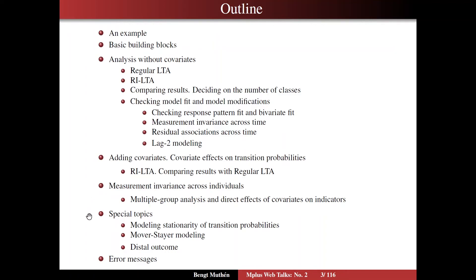Then I'll turn to special topics: modeling stationarity of transition probabilities, mover-stayer modeling, and a long section on distal outcomes added to the latent transition model. Finally, I'll turn to error messages in a long section discussing the typical error messages you get when using multiple latent class variables as in latent transition analysis. I'll discuss maximum likelihood theory for identification and non-identified models, and make some final comments about this type of modeling in general.